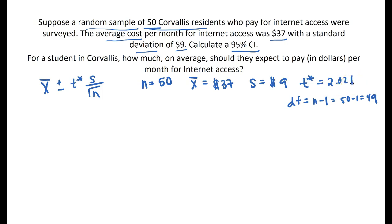Now let's plug it all together. So we do $37 as our point estimate or x̄ plus or minus our t-critical value of 2.021 times our sample standard deviation of $9 divided by the square root of our sample size of 50. This expression here is our standard error times our margin of error.